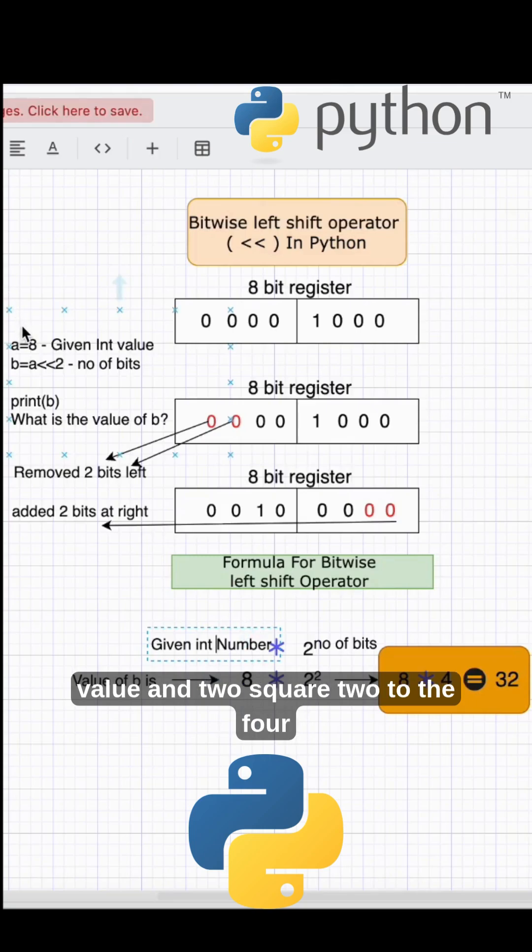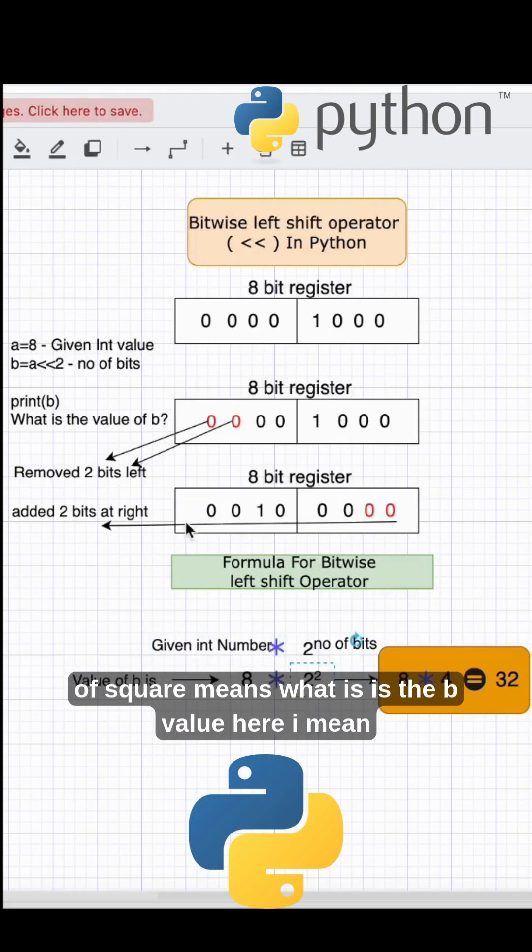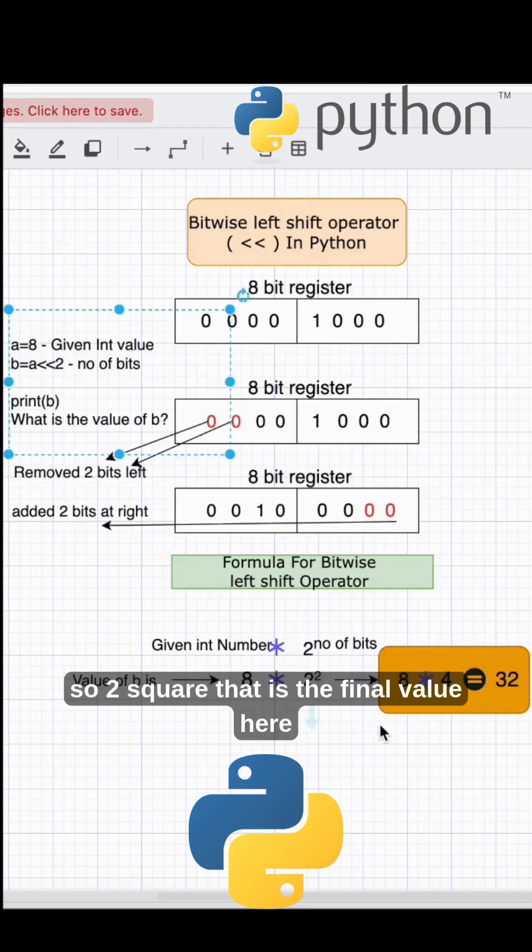The given number is 8, the a value, and 2 to the power of the number of bits. That is the formula: 2 to the power of 2, which means the number of bits we removed is 2. So 2 squared gives us the final value of 32. That is the answer for b.